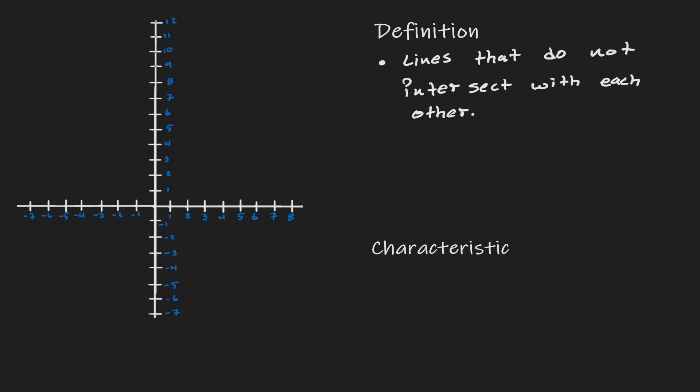Now based on this definition, let's think about what characteristics should these lines have. So I'm going to choose two random points, negative 4, 1 and 2, 6. Now let's create our line.